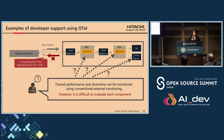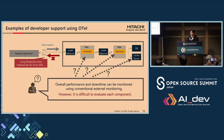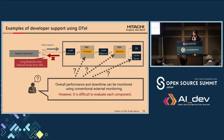Now I'll talk about how to use OpenTelemetry in a real development scenario, focusing on failure and performance testing during the development phase. In external monitoring, we use a request generator to send requests and analyze system response — looking at response time, HTTP status code, error rate, and downtime. This approach helps us evaluate the overall performance of the system.